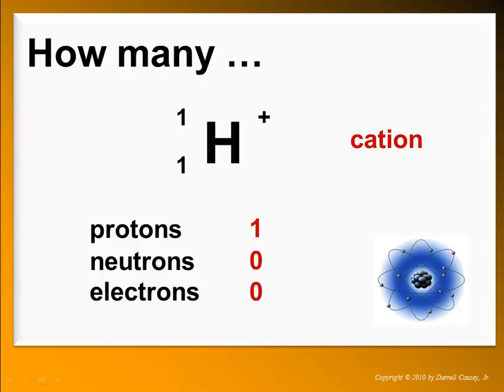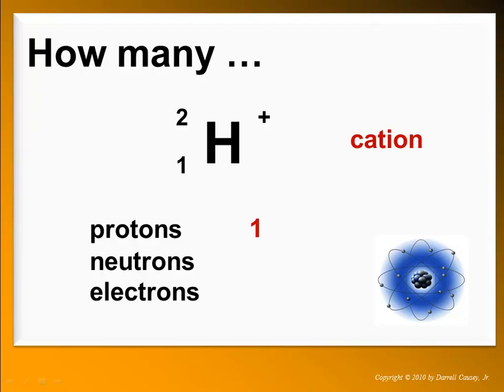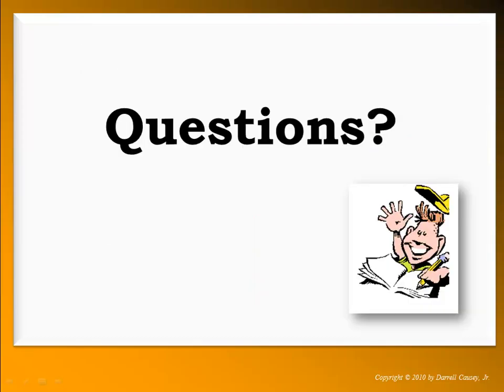Did you get that one right? The hydrogen ion is a cation. There's one proton, one minus one is zero neutrons, and zero electrons. There's another hydrogen isotope. It has a little bit of difference in the neutrons. So this is deuterium, actually. Hope you got that right.